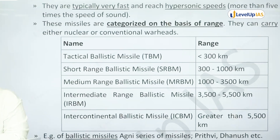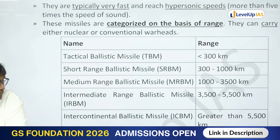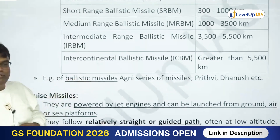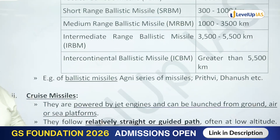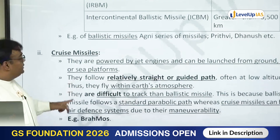In India, the Agni series of missiles — Agni 1, Agni 2, Agni 3, Agni 4, Agni 5, and Agni 6 which is being developed — they are all ballistic missiles. The Prithvi series and Dhanush series are also all ballistic missiles.